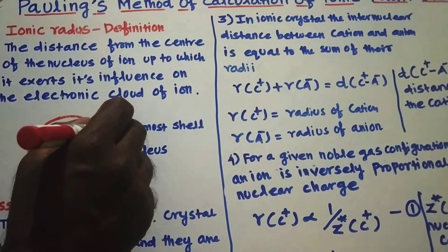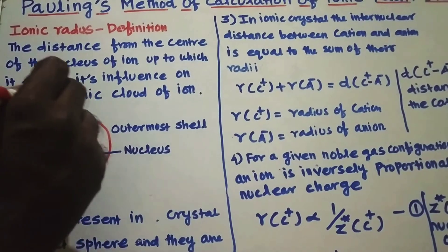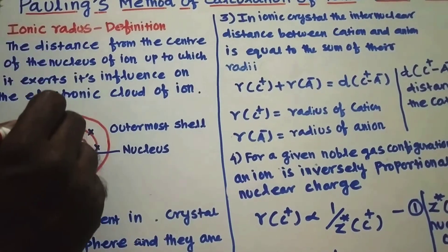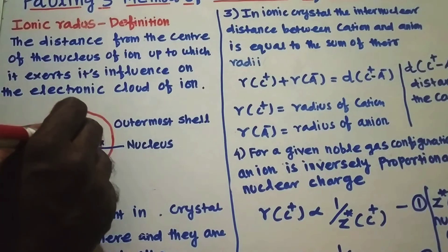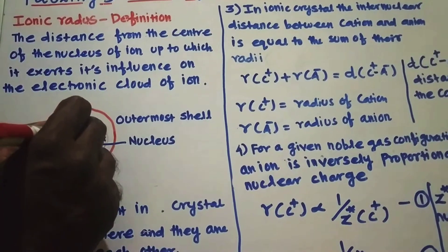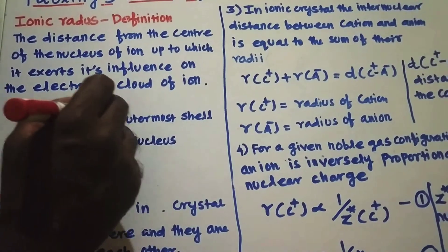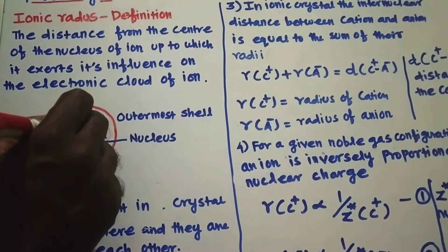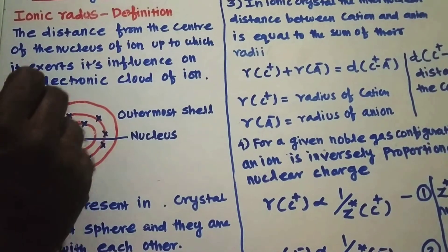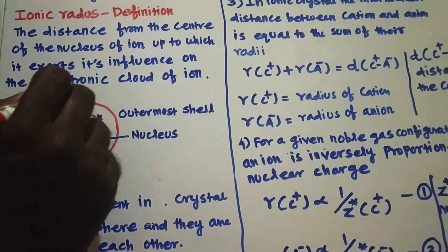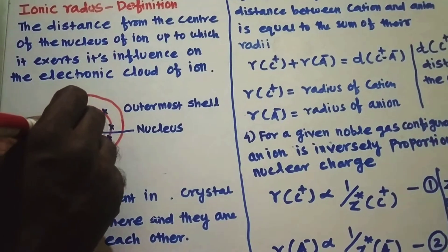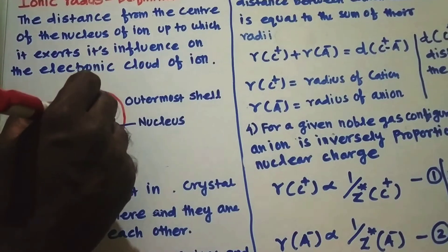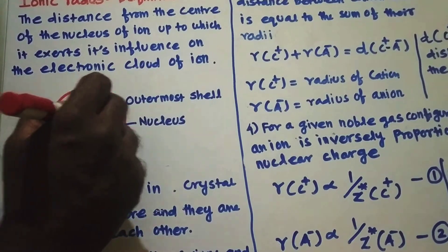Now let us consider an atom to understand the concept of ionic radius. This is the atom. In the center there is a nucleus. The electrons are revolving around the nucleus in various orbits like K, L, M. M is the outermost shell and in the center there is a nucleus.